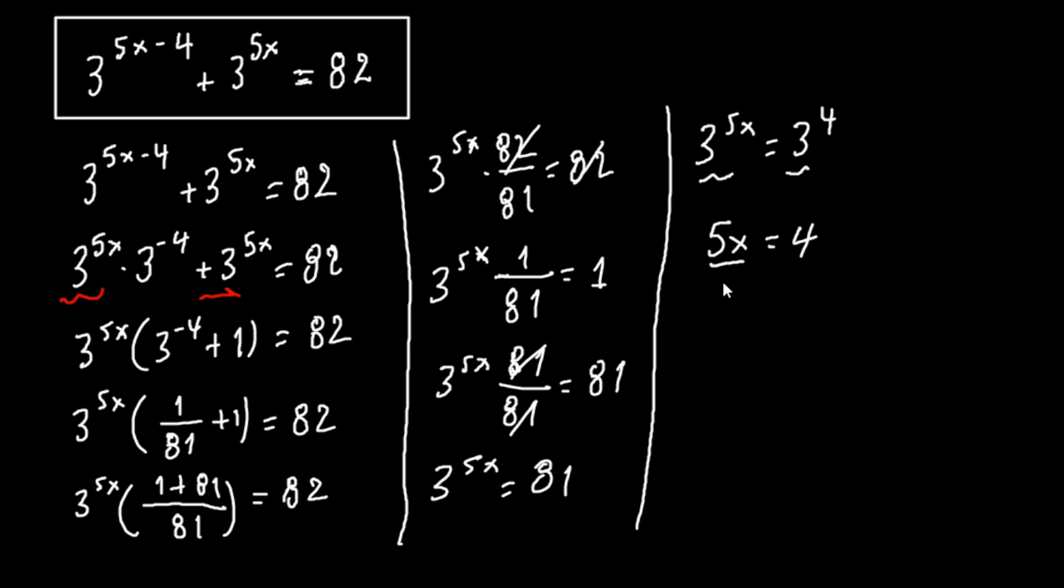If we divide both sides by 5, we have that x equals to the fraction 4 over 5. And this is our final solution.